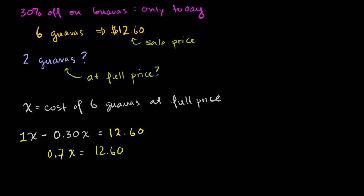And once you get used to these problems, you might just skip straight to this step right here. You say, hey, 70% of the full price is equal to my sale price, right? I took 30% off. This is 70% of the full price. You might just skip to this step once you get used to these problems a little bit. And now we just have to solve for X. Divide both sides by 0.7. So you get X is equal to 12.60 divided by 0.7. We could use a calculator, but it's always good to get a little bit of practice dividing decimals.